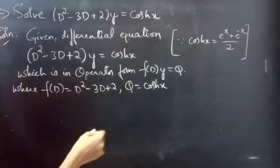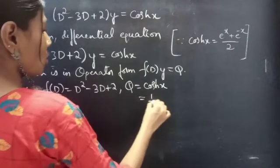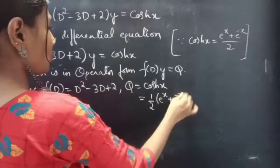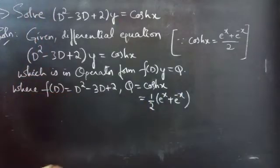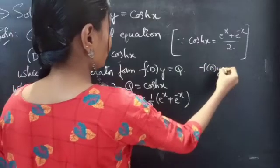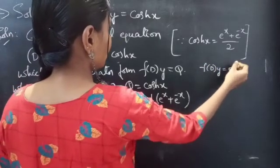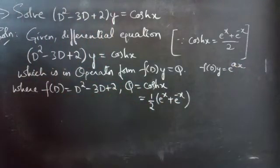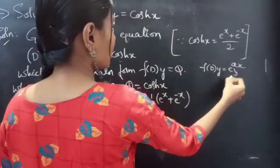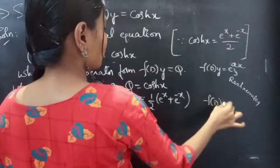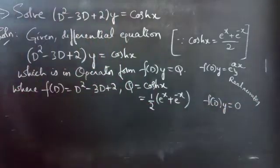This cosh(x) can be written as (1/2)(e^x + e^(−x)). We have Q as an exponential function, so we can say we are given a problem of the form f(D)·y = e^(ax), where a is a real number.